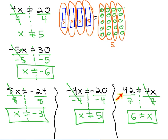If we take time to be careful and notice when the operation connecting x to the number is multiplication, we can simply get the x alone by dividing into groups or dividing by the coefficient or number in front of the x.